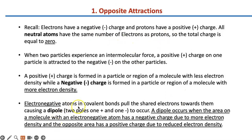Electronegative atoms in covalent bonds pull the shared electrons towards them — they're the greedy hogs we talked about in the periodic table lesson. This causes a dipole, or two poles: one positive and one negative. A dipole occurs when the area on a molecule with an electronegative atom has a negative charge due to having more electron density, and an opposite area has a positive charge due to reduced electron density.